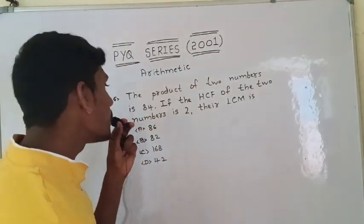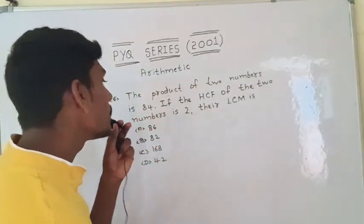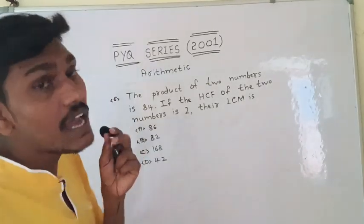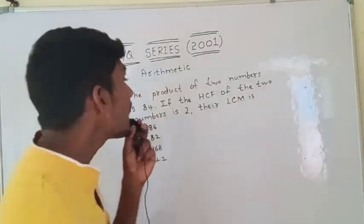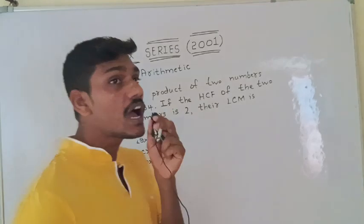If HCF of the two numbers is 2, HCF of two numbers is 2. What number is HCF? HCF is 2. Their LCM is the number of two numbers.